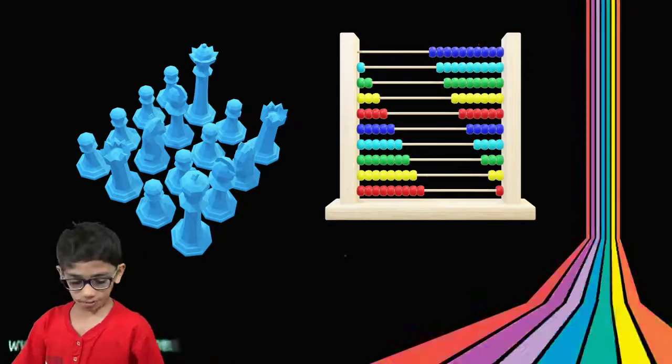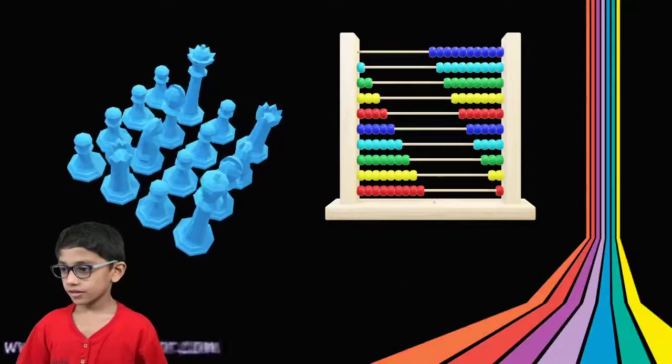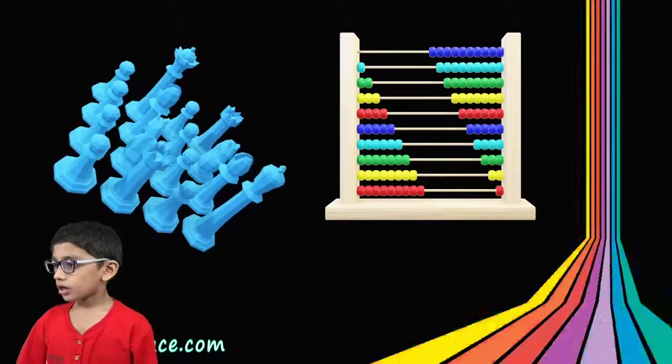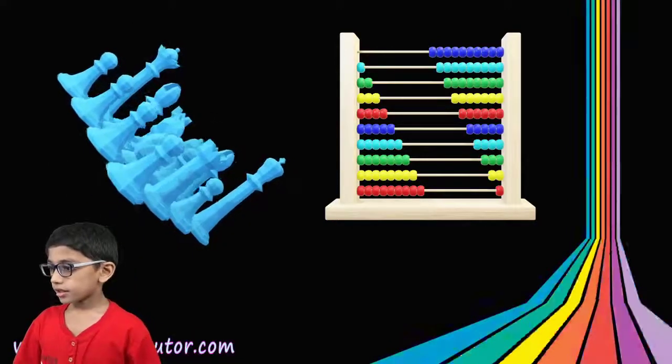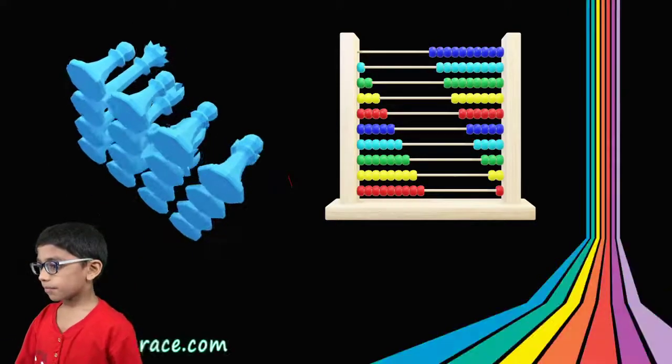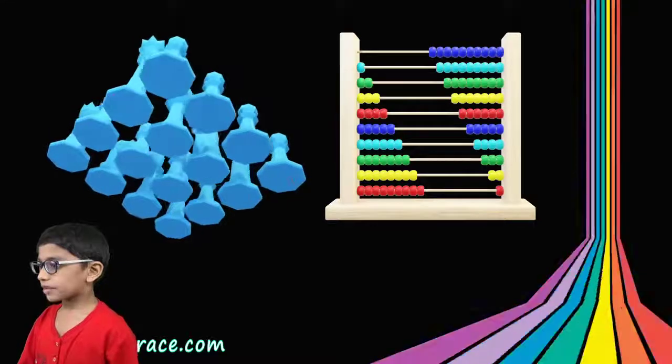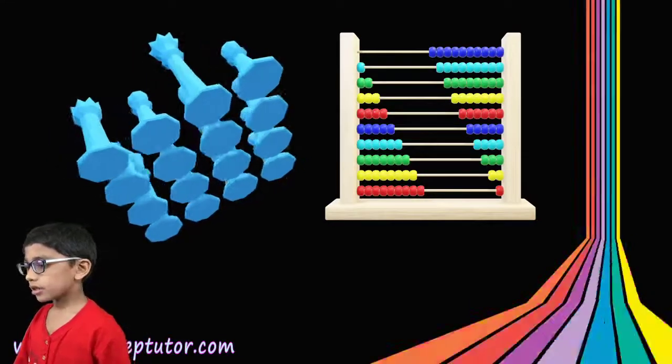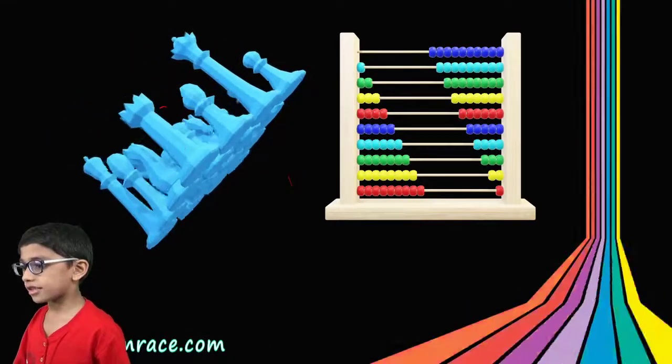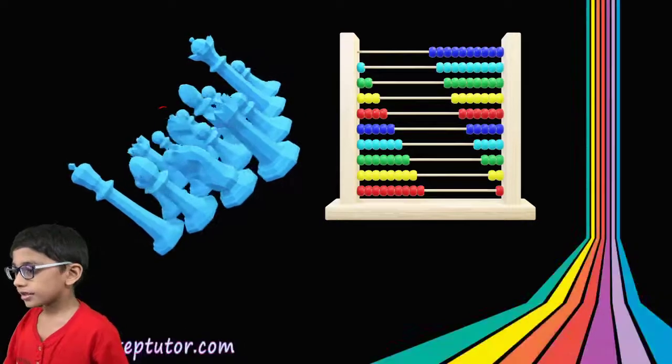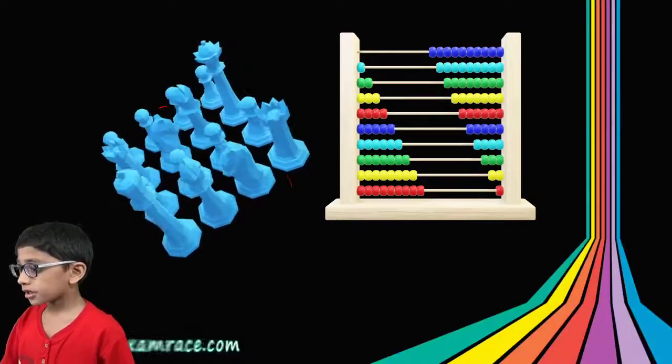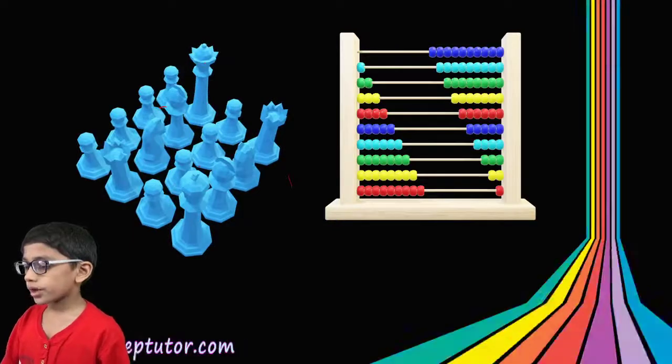This is an abacus. And these are chess pieces. These are pawns, rooks, knights, bishops, the king, and the queen.